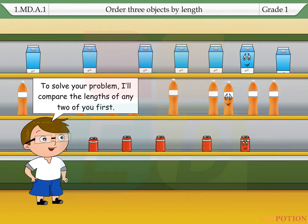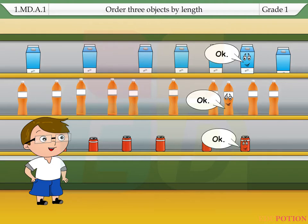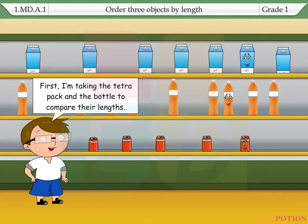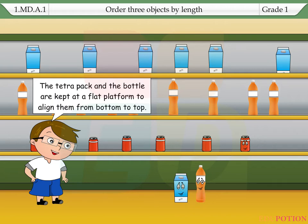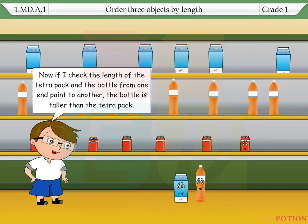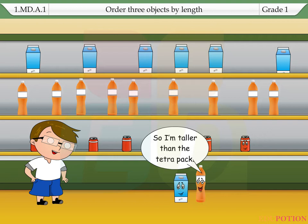To solve your problem, I'll compare the lengths of any two of you first. First, I'm taking the Tetra Pak and the bottle to compare their lengths. The Tetra Pak and the bottle are kept at a flat platform to align them from bottom to top. Now, if I check the length of the Tetra Pak and the bottle from one end point to another, the bottle is taller than the Tetra Pak. So, I'm taller than the Tetra Pak.